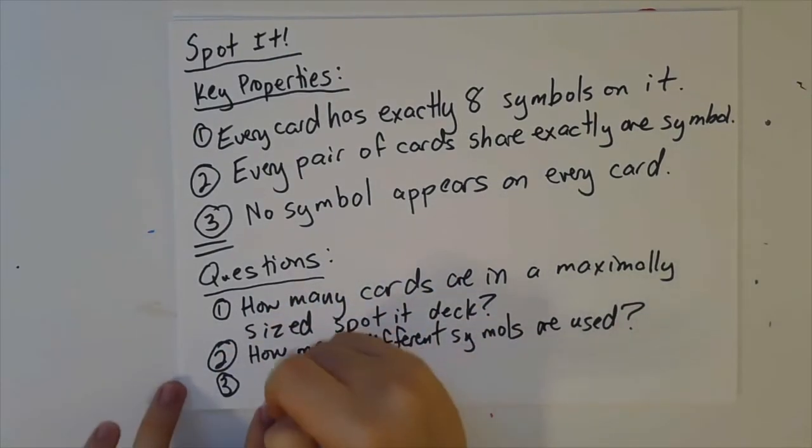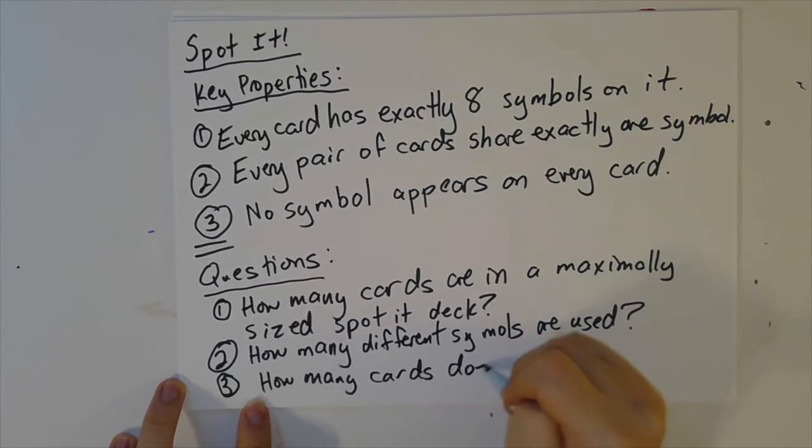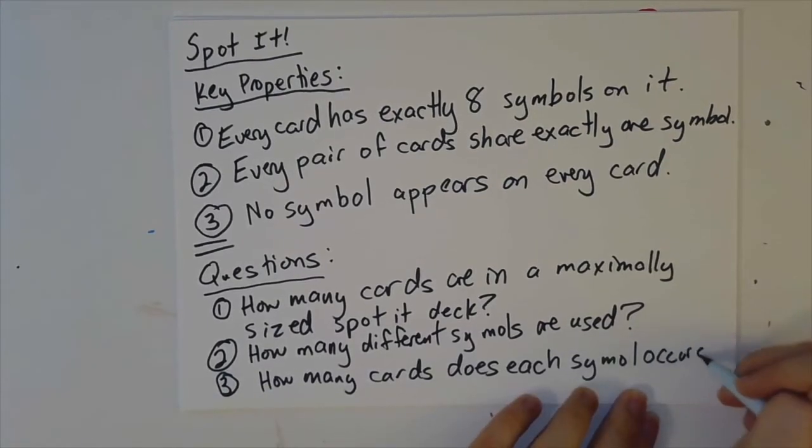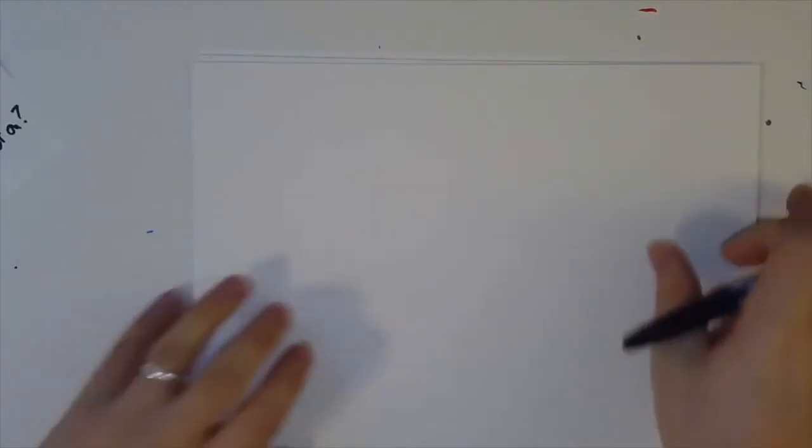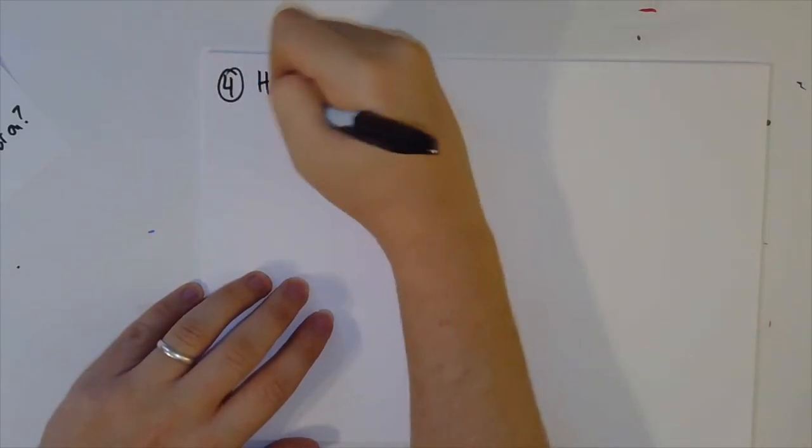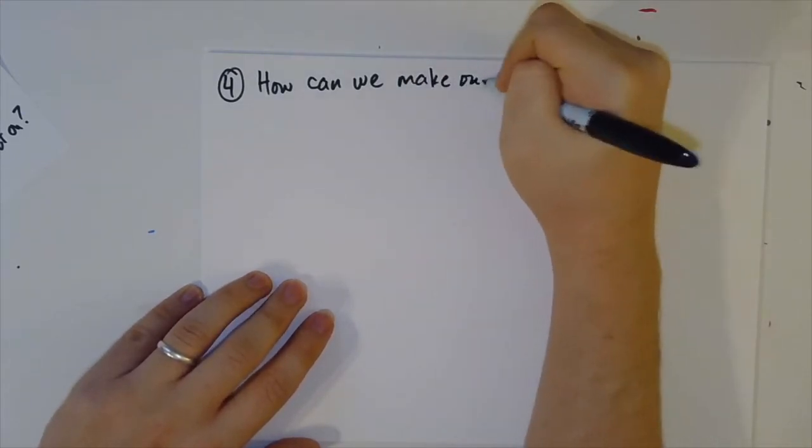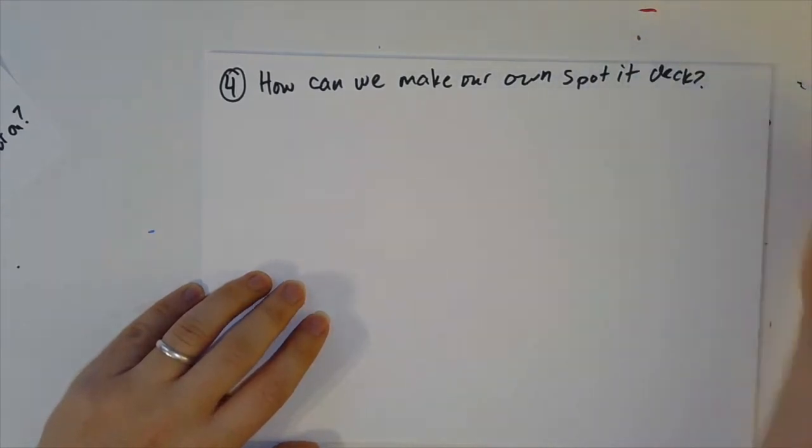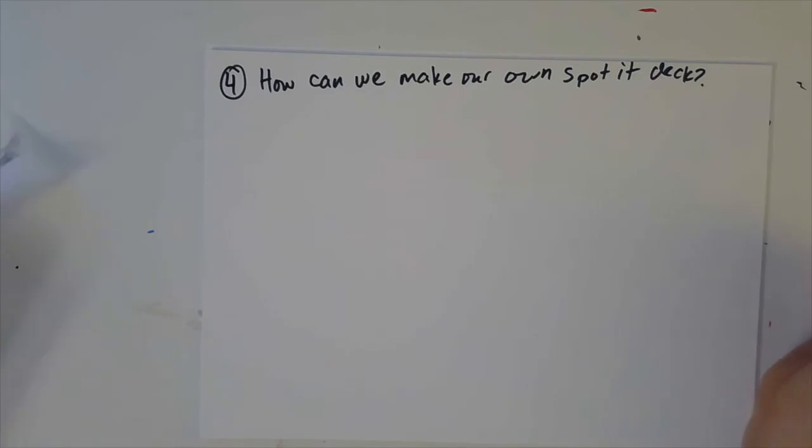I also want to know, how many cards does each symbol occur on? There will be other questions, too. Like, we want to know, how can we make our own Spot It deck? So, in other words, if you decided that you wanted to pick your own bunch of symbols, you could say, how can I make one? And we'll talk about that by the end of this week.